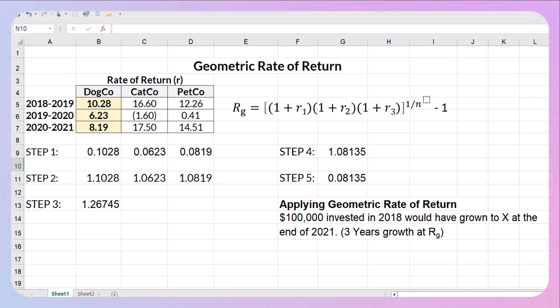So how would I apply this? If I took $100,000 and invested it in DogCo in 2018 based on this geometric rate of return, what would that investment have been worth at the end of three years? So three years growth at our R sub G.